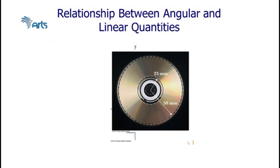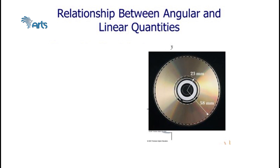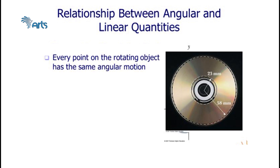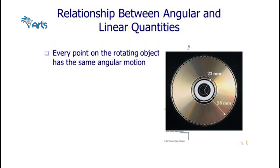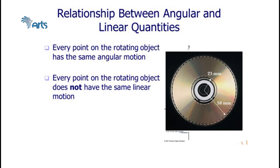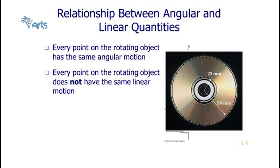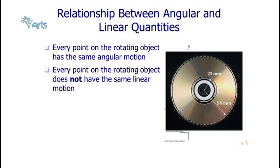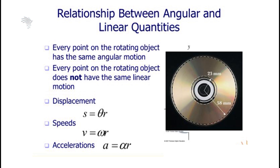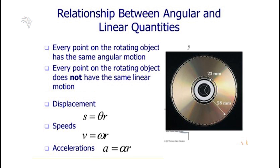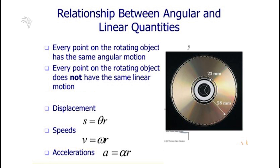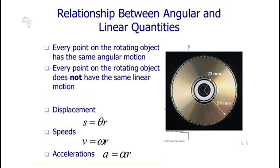For the relation between angular and linear quantities: every point on a rotating object has the same angular motion, but not the same linear motion. To calculate displacement, s equals theta times r, where s is arc length, theta is the angular displacement, and r is the radius of the disk.